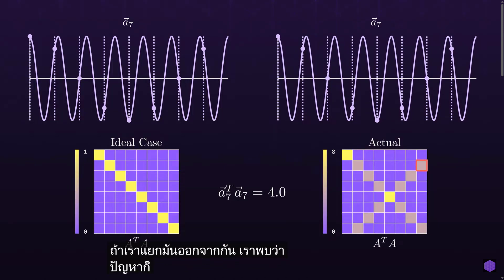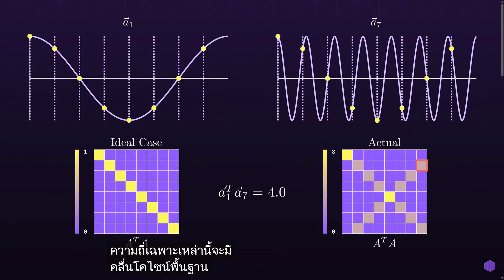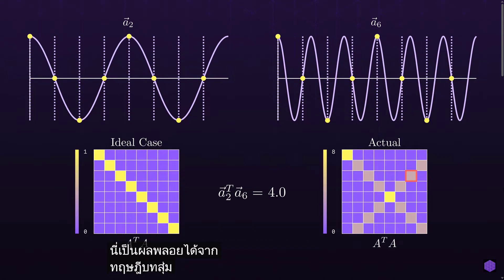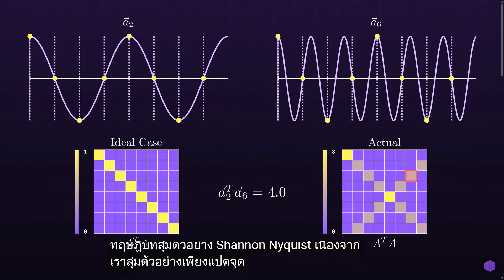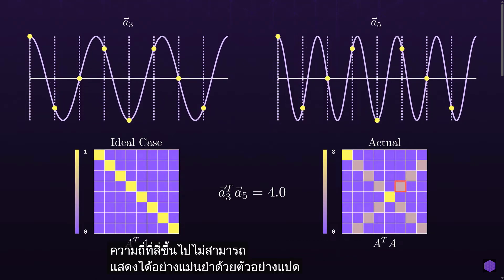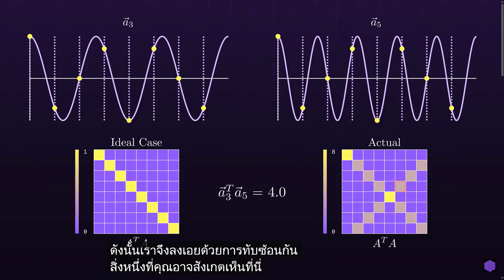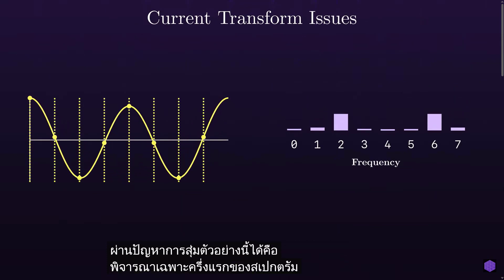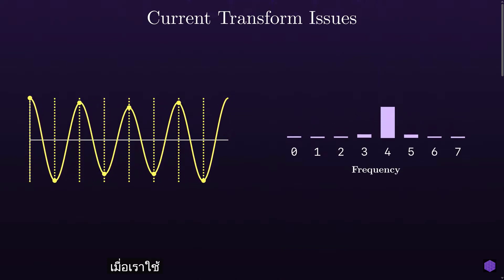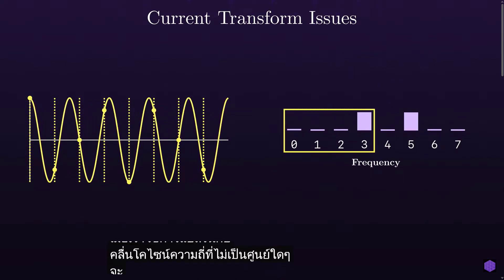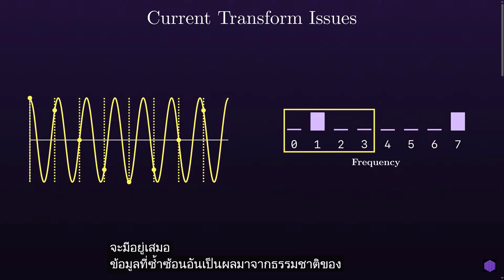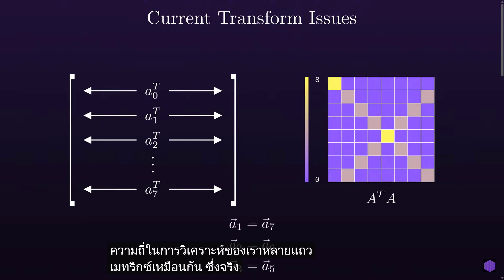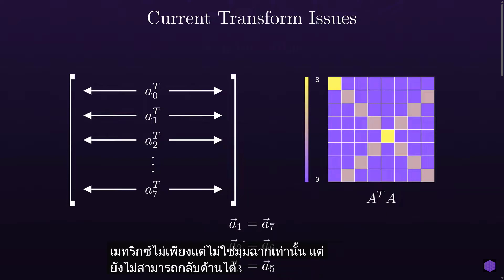Some of you may have noticed this is actually not accurate. It turns out there are particular pairs of analysis frequencies that have a non-zero dot product even when the underlying frequencies are different. If we compute every combination of dot products between these analysis frequencies, we see an interesting pattern — for every non-zero analysis frequency, there exists exactly one other frequency that results in a positive dot product. The problem is that even though these particular frequencies have different underlying cosine waves, the samples themselves are actually identical. This is essentially a byproduct of the Shannon-Nyquist sampling theorem: since we're only sampling eight points, any frequency four or above cannot be accurately represented, so we end up with overlap.